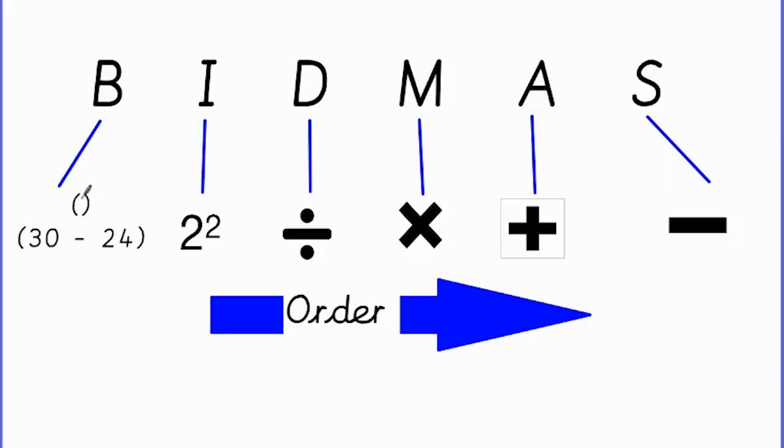So BIDMAS stands for Brackets, Indices, Division, Multiplication, Addition, and Subtraction.